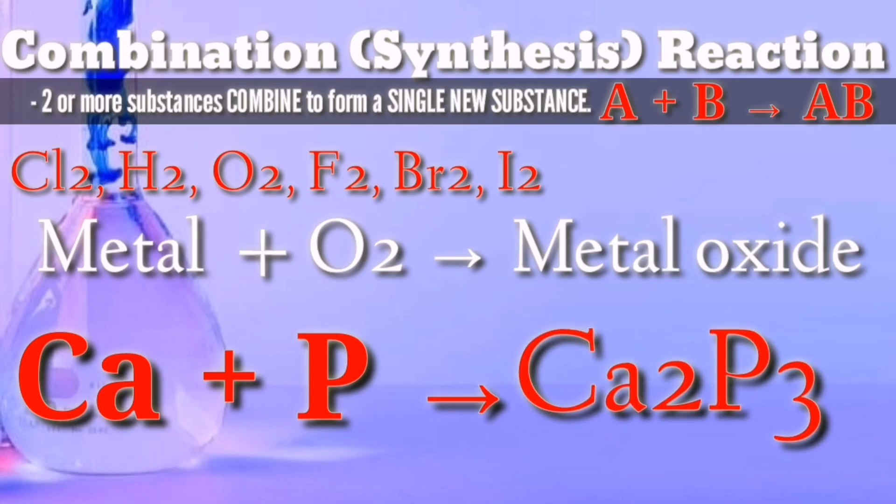Question: Why is there no subscript 2 in phosphorus like chlorine and fluorine? Because phosphorus is not a diatomic molecule, it is a monoatomic substance.